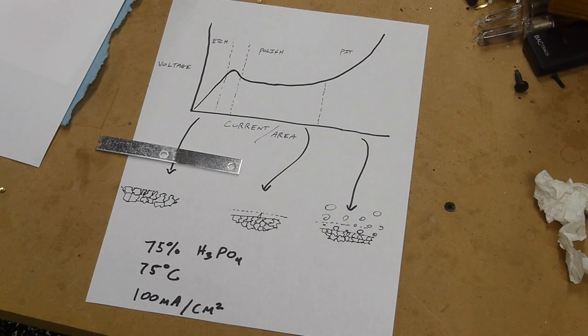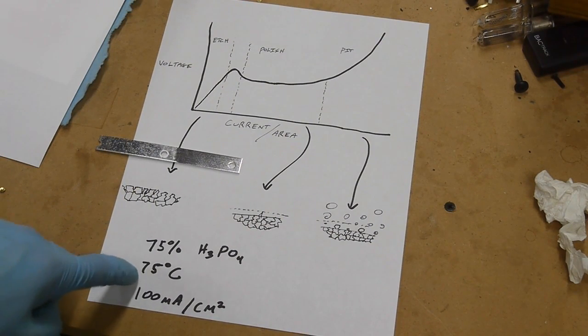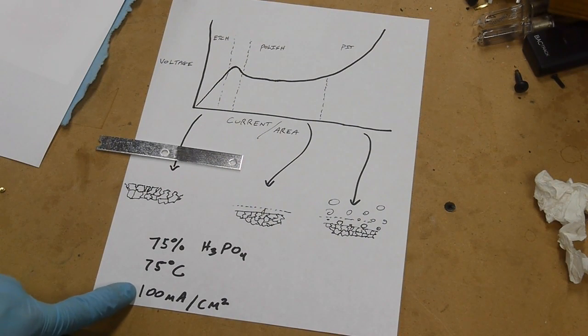To sum up, the recipe that I recommend is 75% phosphoric acid at 75 degrees C. And you want to use about 100 milliamps per square centimeter. And conveniently, this comes out to be just about right for battery charger voltage, you know, kind of in the neighborhood of 14 volts or so. Okay, see you next time. Bye.